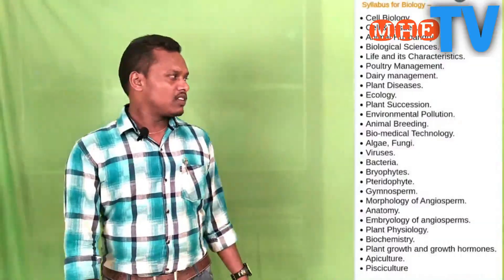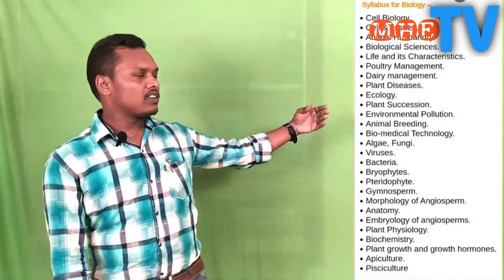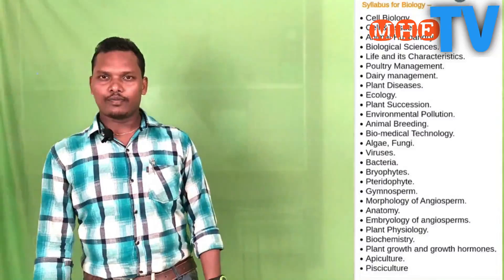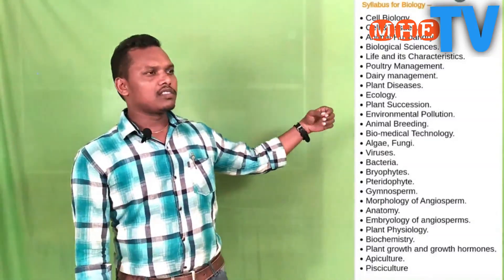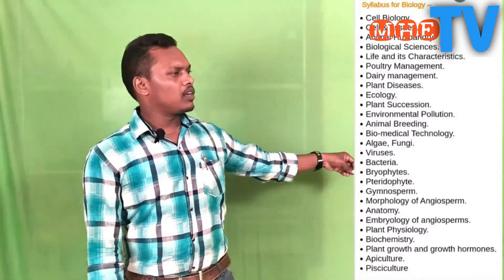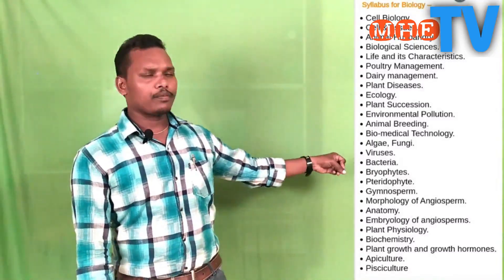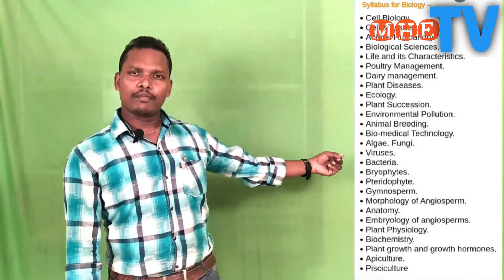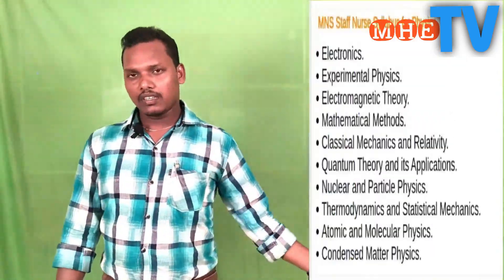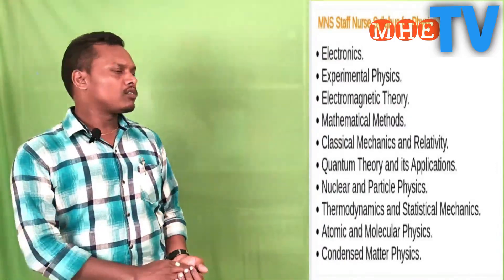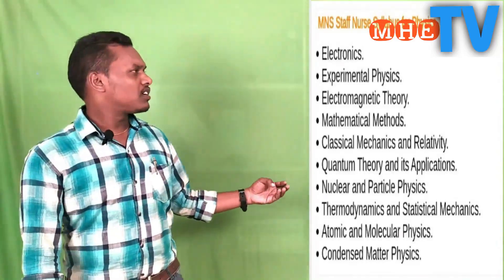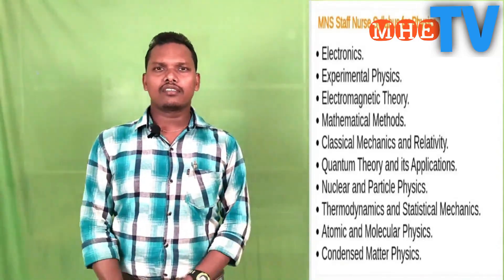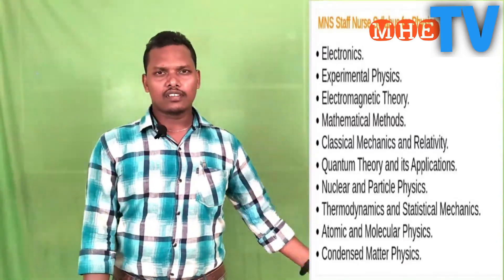First of all, you have to know the topics about the syllabus, including biology topics as well as other topics including physics. The biology topics cover cell biology, plant associations, ecology, environmental pollution, biology of plants, physiology of animals, and physiology of plants. The physics topics include nuclear physics, NMR theory, electromagnetic theory, statistical mechanics, etc.